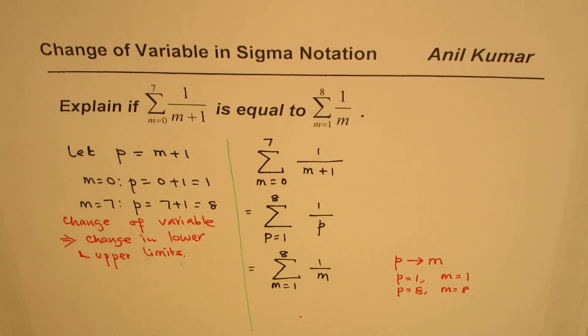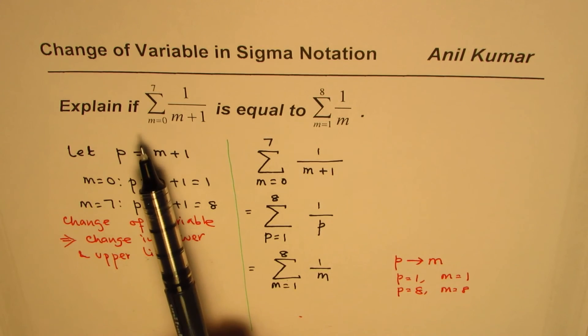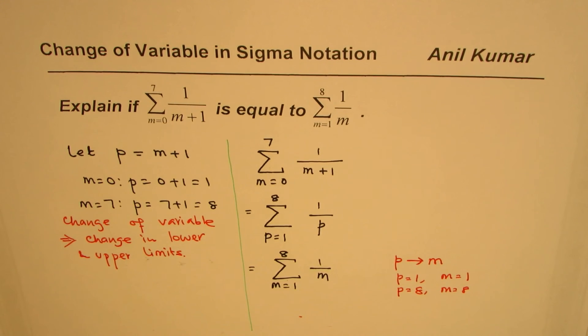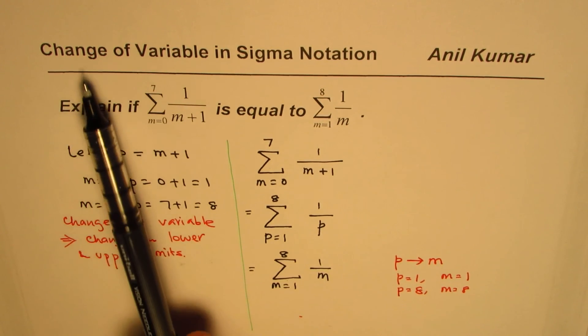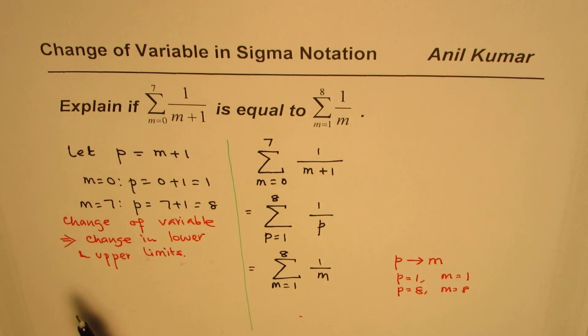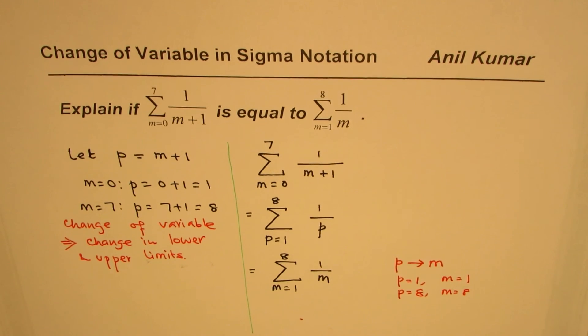I hope this technique helps you to learn how to write a series given in sigma notation or summation in a different form. That transformation you should remember could be done by change of variable, and whenever you do change of variable, the limits for lower and upper bound also change, so they should be considered as shown in this particular video. I'm Anil Kumar and I hope that helps. Thank you and all the best.